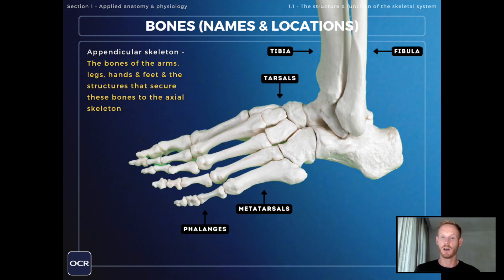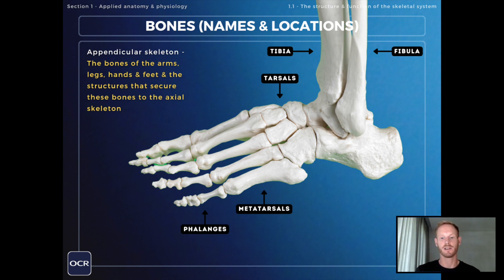Moving down to the foot, you can see the tibia and fibula — the two bones in the lower leg. At the top of the foot we have the tarsals, not to be confused with the carpals at the top of the hand. The metatarsals are in the middle, again not to be confused with the metacarpals in the hand. And then the phalanges or toe bones — the same name is used for both the toe bones and the finger bones.